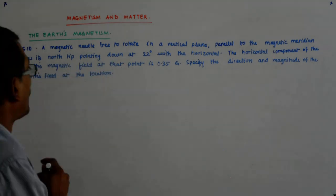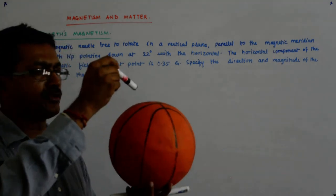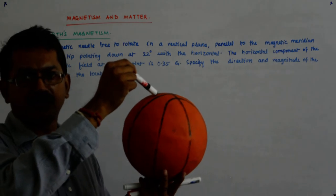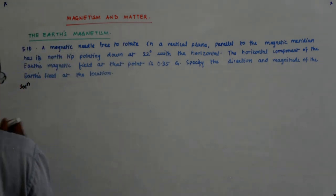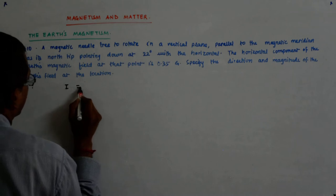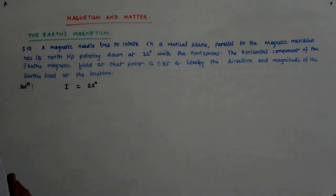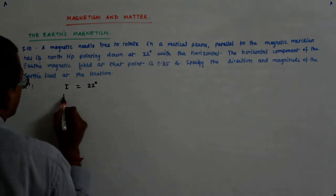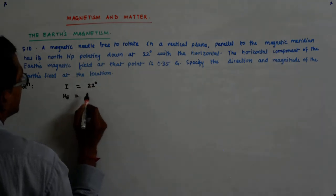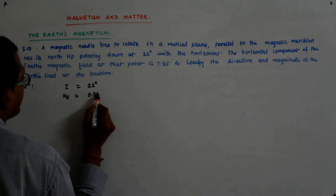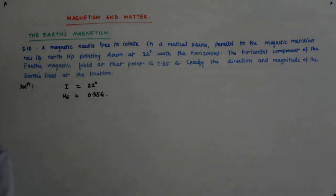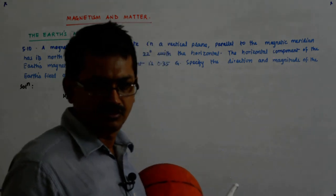Has its north tip pointing down at 22 degrees. So north tip is pointing down at 22 degrees means that it is the angle of inclination I or the angle of dip that is 22 degrees. And the horizontal component of the earth is 0.35 gauss.